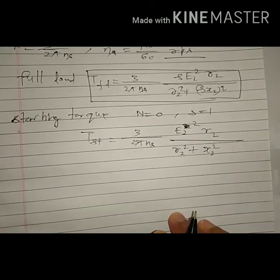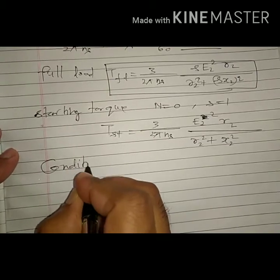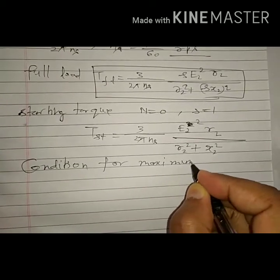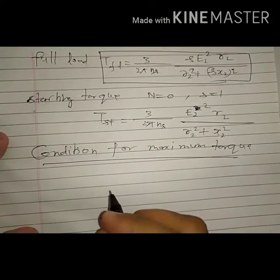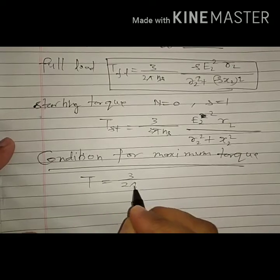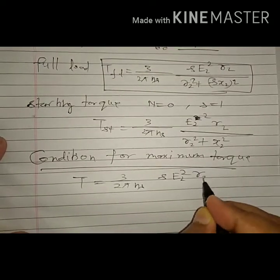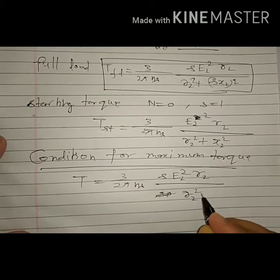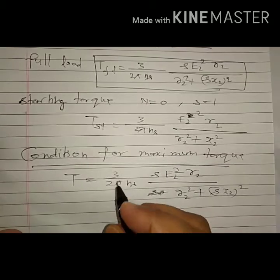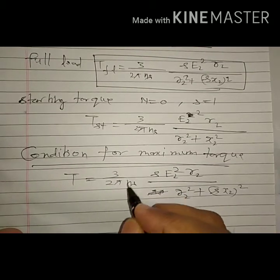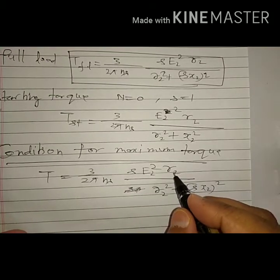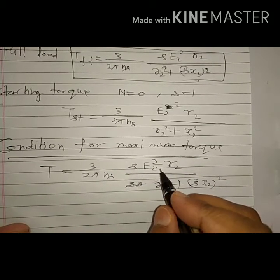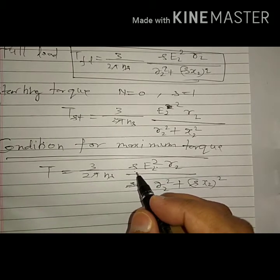For the condition of maximum torque, the torque expression is T = (3 / (2*pi*ns)) * s * e2² * r2 / (r2² + (s*x2)²). For a given induction motor, K is constant, rotor resistance r2 is constant, leakage reactance x2 is constant, and e2 is a constant value. The only variable in running condition is speed, which means slip s.